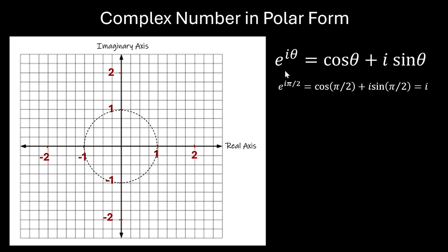Now consider the complex number e^(iota·π/2). This has length 1 and its direction is π/2 radians, or 90°, from the real axis. Solving: e^(iota·π/2) = cos(π/2) + iota·sin(π/2) = 0 + iota·1 = iota. So e^(iota·π/2) = iota — a length of 1 unit at 90° from the real axis.